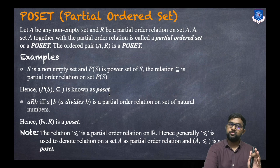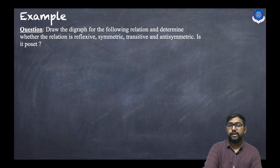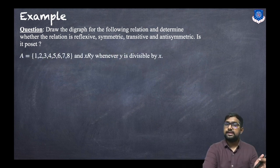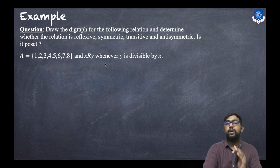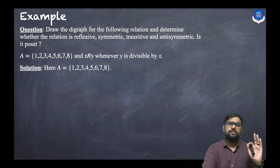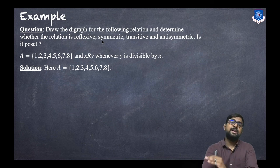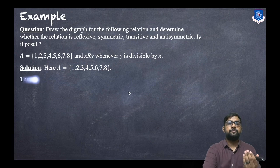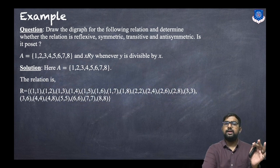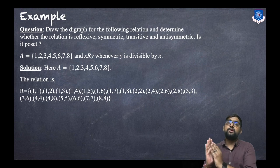Now let's draw the digraph for the following relation and determine whether it is reflexive, symmetric, transitive, anti-symmetric, and whether it is a POSET. The set A = {1, 2, 3, 4, 5, 6, 7, 8} and x is related to y whenever y is divisible by x — simply, x divides y.